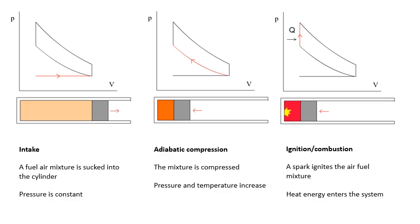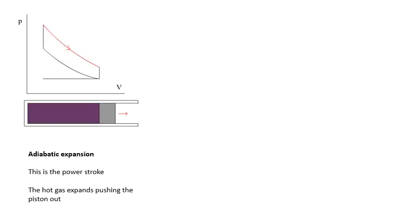Chemical energy changes into heat, and so a lot of energy is given to the system. It gets very, very hot, the pressure gets much, much bigger — see on the graph the pressure goes up. Heat energy enters the system. This is the power stroke — this is where the gas pushes the piston out very quickly. And this is an adiabatic expansion, the power stroke. The hot gas expands, pushing the piston outwards.